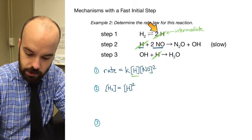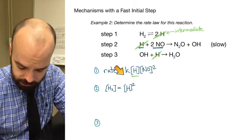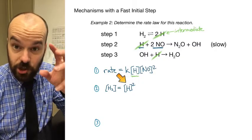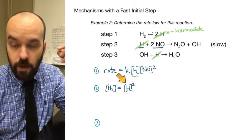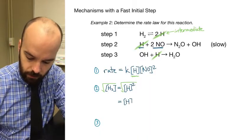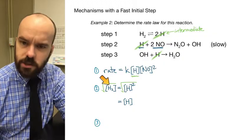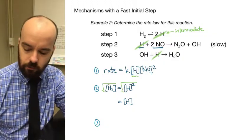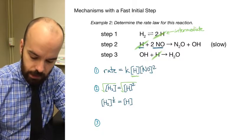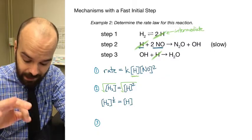We're not ready to substitute yet, because our rate law has [H] — not [H]². So we take the square root of both sides to isolate [H]. We write that as a power of one-half rather than a square root symbol, giving us [H] equals [H₂]^(1/2).